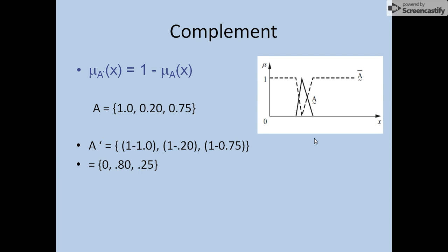Complement is performed with one set only. We have a single set A with three specific values, and we calculate the complement as one minus the membership value. That is: 1 − 1.0, 1 − 0.20, 1 − 0.75, giving results of 0.0, 0.80, and 0.25. This is the pictorial representation of the complement of set A.